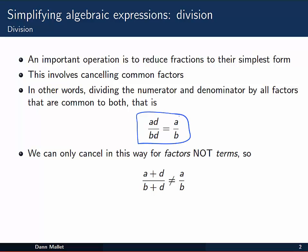We'd start with AD over BD, noticing that there's a D on the top and on the bottom and that they're both factors in products. We can cancel them out and reduce this fraction to A over B.